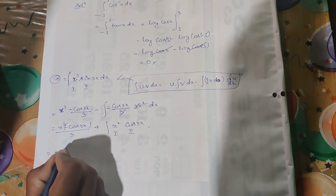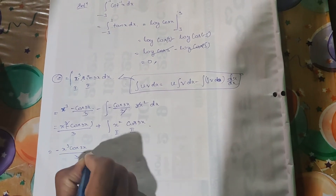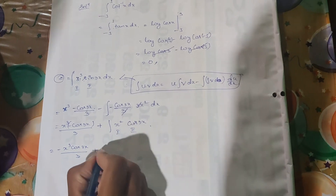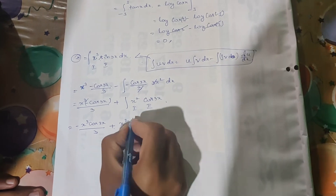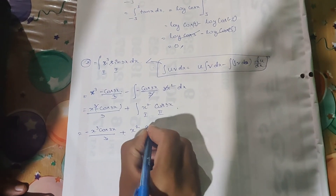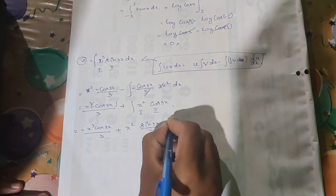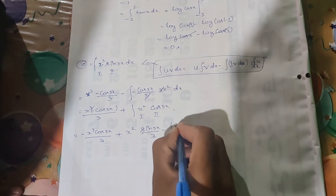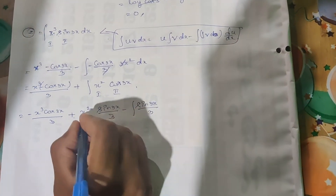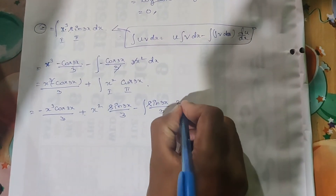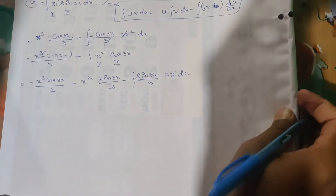Continuing — minus x to the power of 3 cos(3x) divided by 3, plus. Again, the first function is x to the power of 2, and the integration of cos(3x) is sin(3x) divided by 3. Then the differentiation of the first function is 2x, so we have 2x dx.